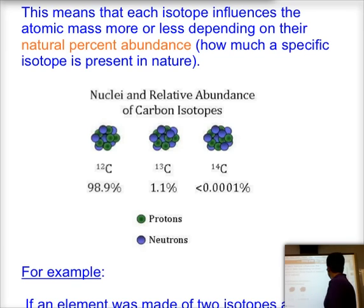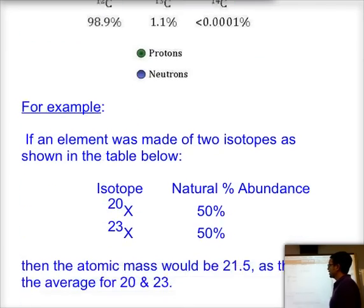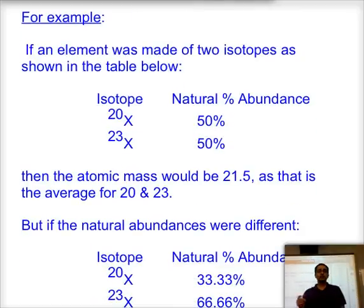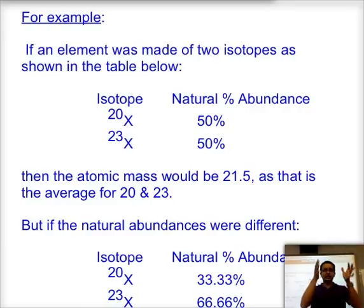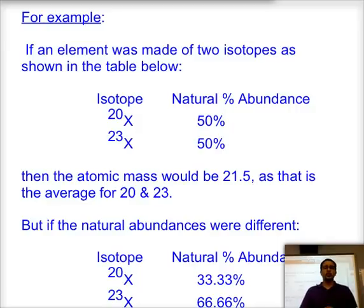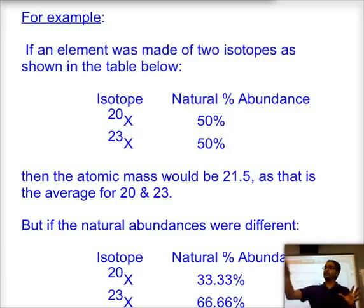If we have element X made of two isotopes with a 50-50 natural abundance, we simply average the two masses. In this case the isotopes have masses 20 and 23, so the average is 21.5. Note that an atomic mass does not have to be an integer, and in fact on the periodic table you will rarely find any that are exactly whole numbers.